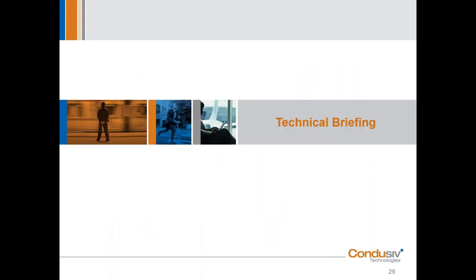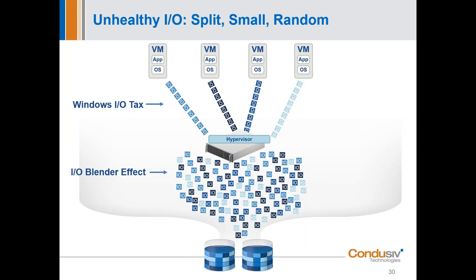Let's jump into the technical briefing, because I'm sure a bunch of you are like, 'That's all good, but exactly how do you do it?' So I realize that this is a rudimentary extraction of what a virtualized environment would look like, but as great as virtualization has been for server efficiency, one of the biggest downsides is that it does add complexity to the data path. This is what the IO stream ends up looking like — this is where we were talking about that split, small, random IO, that unhealthy stream that's very difficult to process.